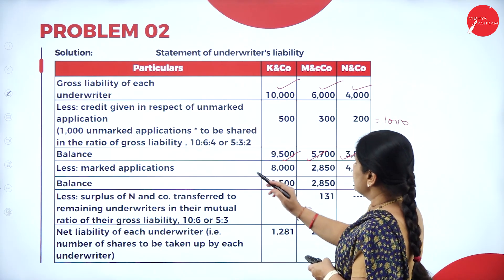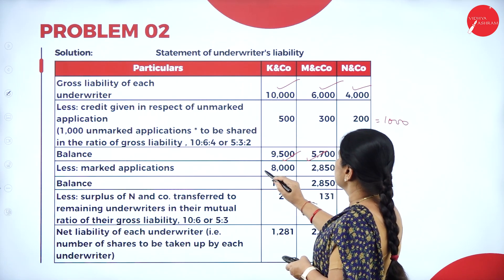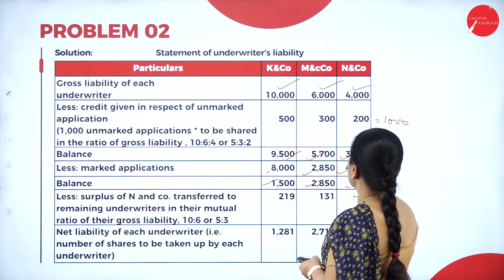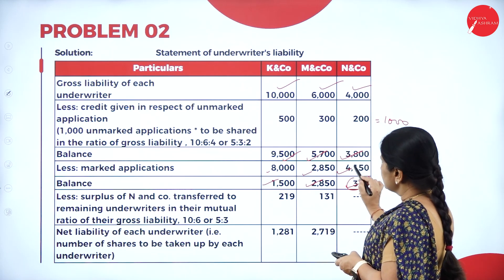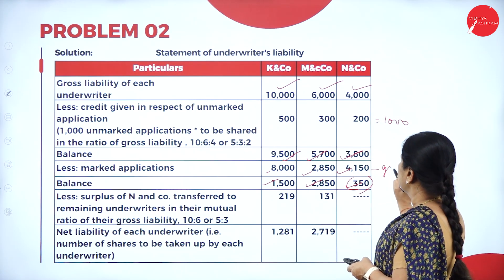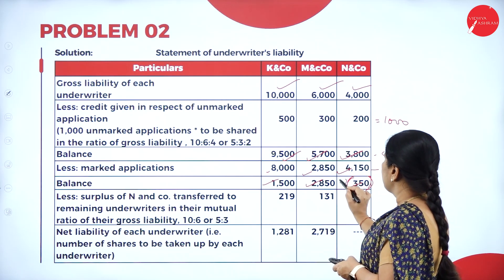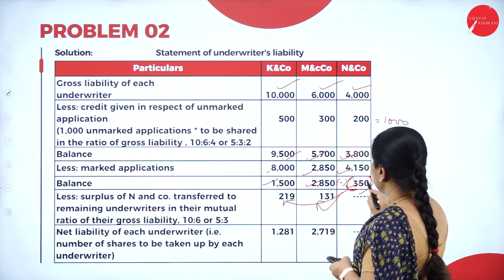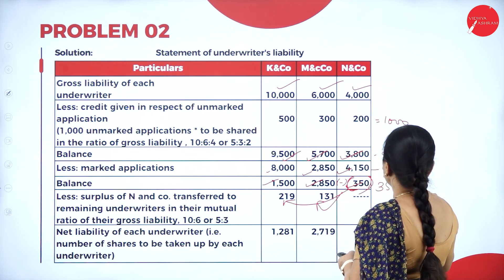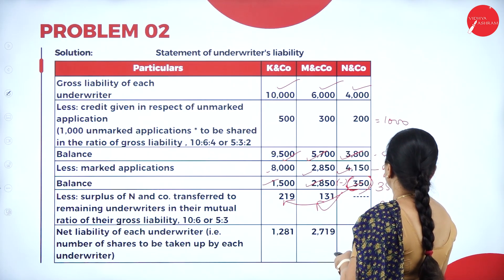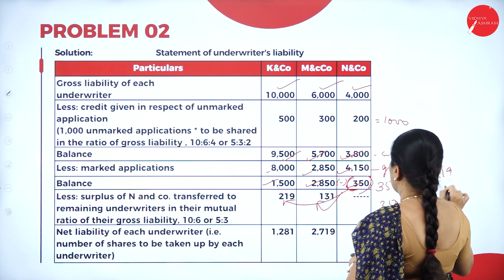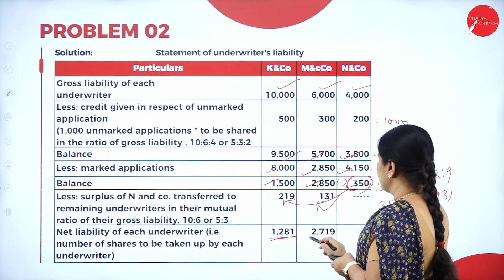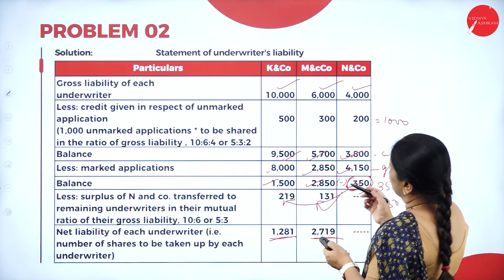Less marked applications: 8,000, 2,850 and 4,150. When we deduct, we get 1,500, 2,850 and minus 350. So 4,150 is greater and this becomes minus 350. This surplus of 350 has to be shared between the other two underwriters in their mutual ratio: 350 into 5 by 8 and 350 into 3 by 8, giving 219 and 131. So when deducted, the net liabilities are 1,281 and 2,719.